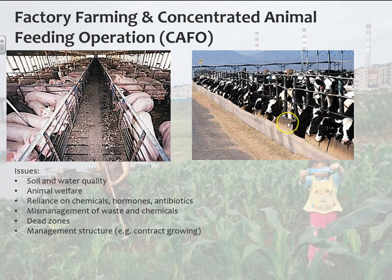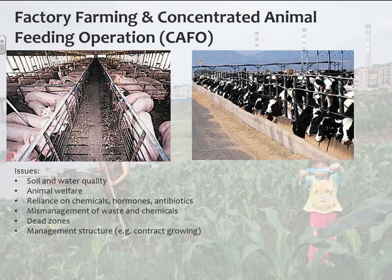With cows especially, but also pigs and chickens, they're feeding them corn. The main diet of cows in the U.S. is corn — this is not natural. Cows are ruminants; they've evolved to eat grass. That's what they digest. They can't really digest corn very well, so it basically makes them sick. You have all these cattle in a small area not eating the foods they're naturally evolved to eat, so they're basically sick a lot, and they end up being fed a lot of antibiotics.